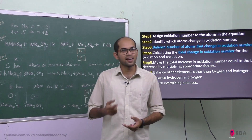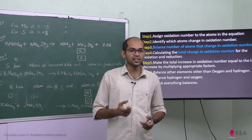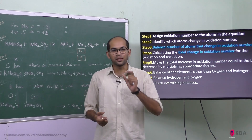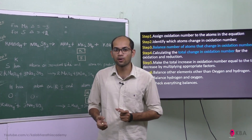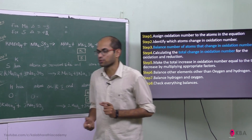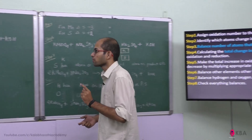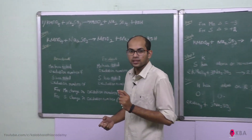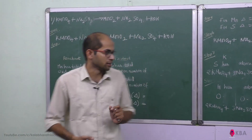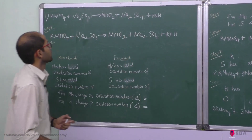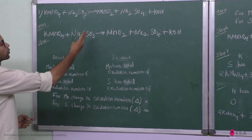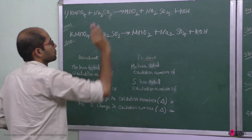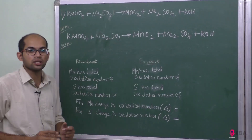In this video, we will solve a sum using the oxidation number method. First, let's look at the problem: KMnO4 plus Na2SO3 gives MnO2 plus Na2SO4 plus KOH.